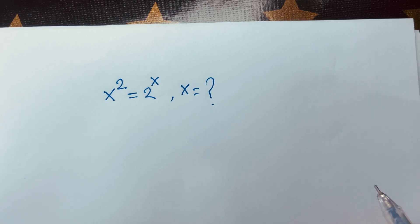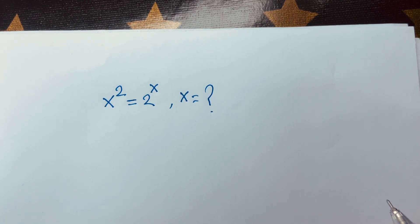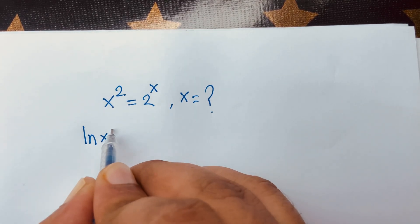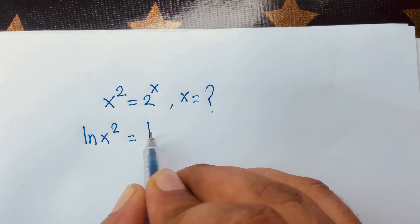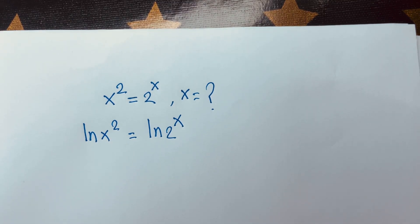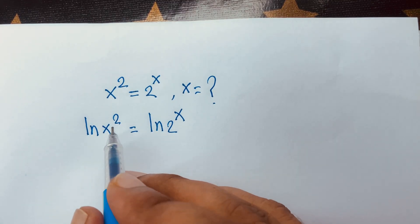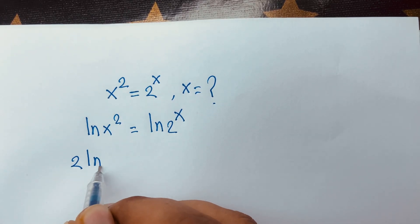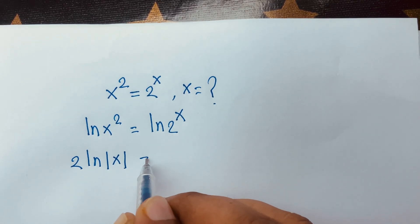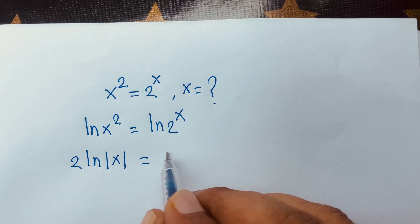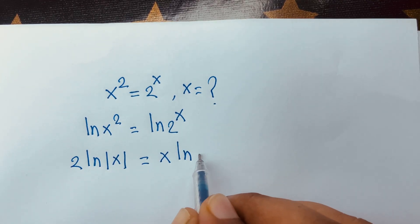So how to solve this equation? First of all, I apply natural log to both sides: ln(x²) is equal to ln(2^x). Then I move the exponent in front, so it becomes 2·ln(x) is equal to x·ln(2).